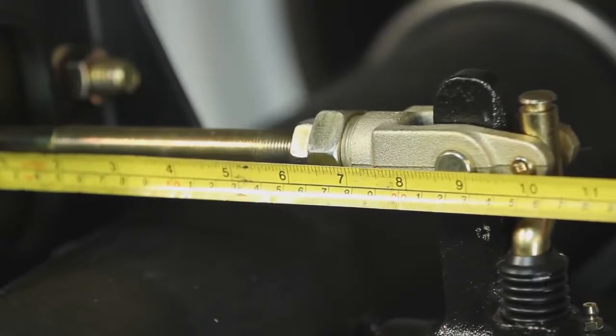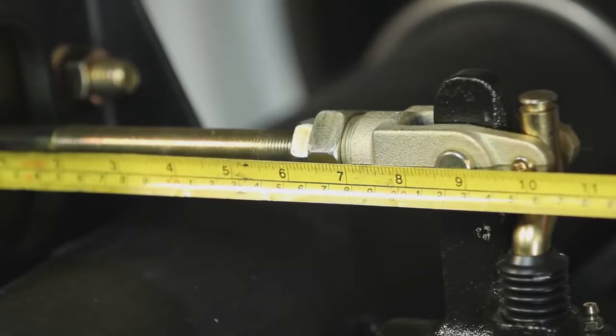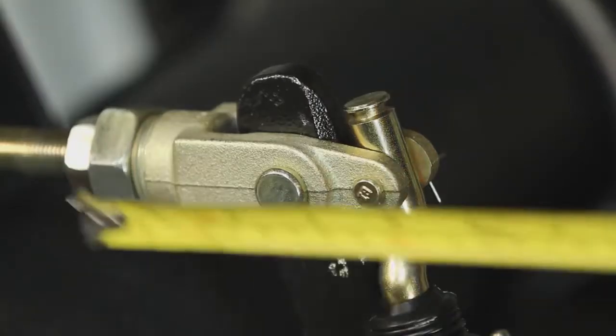Then apply pressure using a lever to activate the slack adjuster until the brake shoes make contact with the brake drum surface. Then take a second measurement.